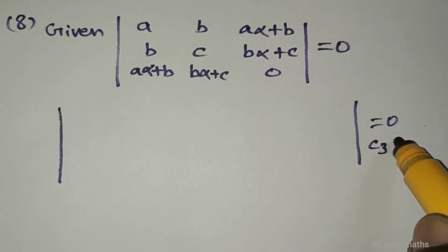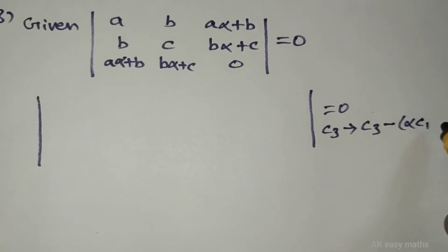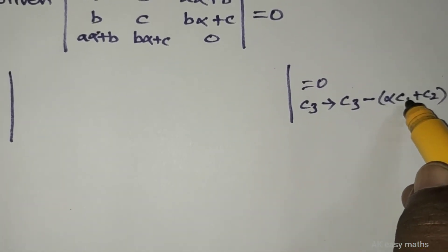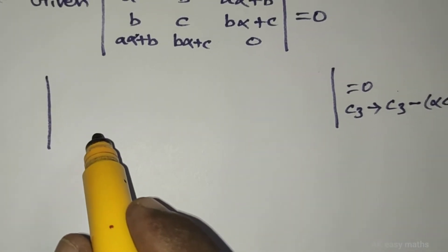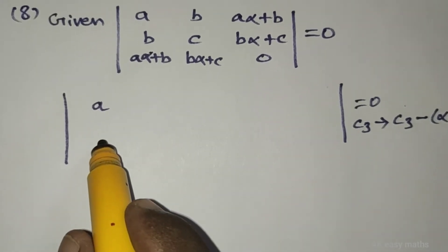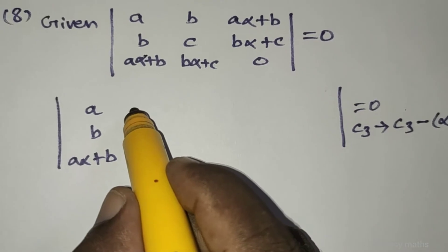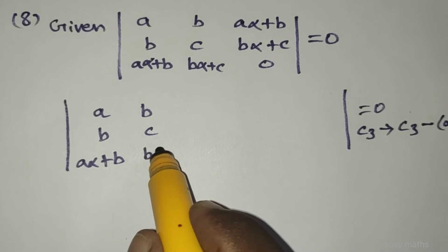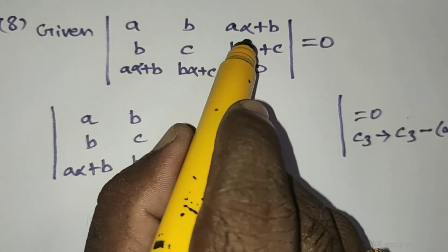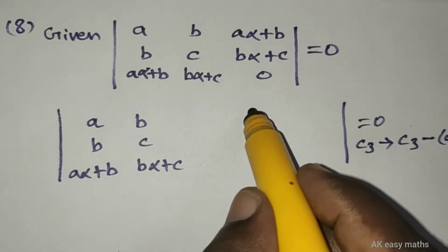Using the column operation c3 implies c3 minus alpha c1 plus c2. In the third column, a alpha plus b minus a alpha minus b equals 0. Similarly, b alpha plus c minus b alpha minus c equals 0. The first two columns remain unchanged.